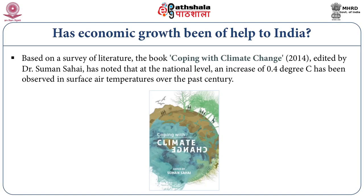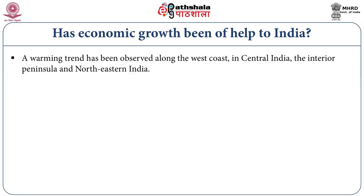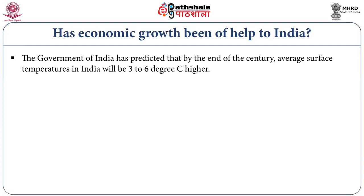Based on a survey of literature, the book Coping with Climate Change in 2014, edited by Dr. Suman Sahai, has noted that at the national level, an increase of 0.4 degrees centigrade has been observed in surface air temperatures over the past. A warming trend has been observed along the west coast, in central India, the interior peninsula, and northeastern India. A trend of increasing monsoon seasonal rainfall has been found along the west coast, northern Andhra Pradesh, and northwestern India, while a decreasing trend has been observed over eastern Madhya Pradesh, northeastern India, and some parts of Gujarat and Kerala. The Government of India has predicted that by the end of the century, average surface temperature in India will be 3 to 6 degrees centigrade higher.